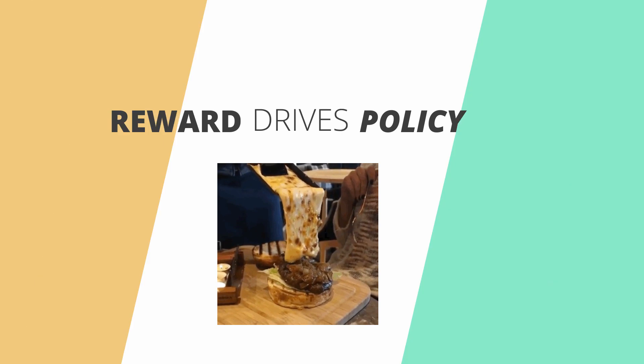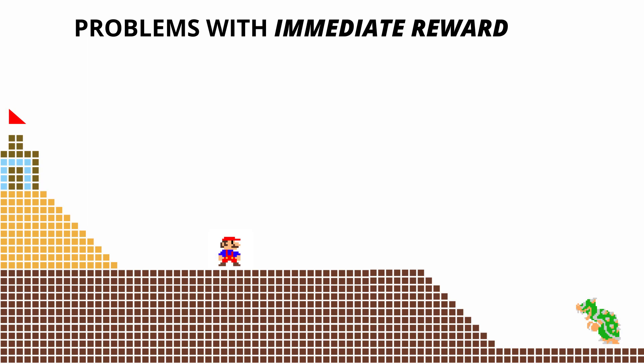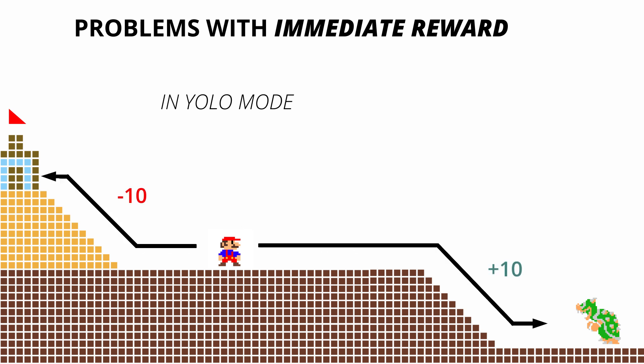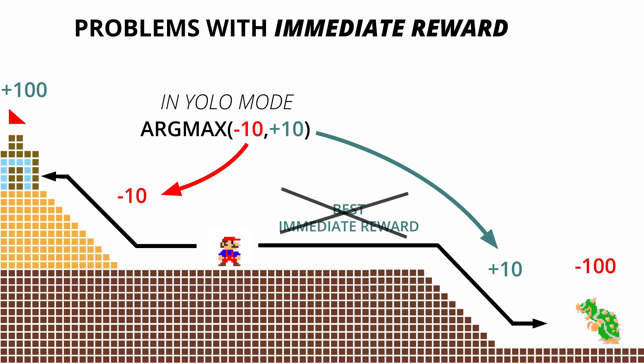Apart from policy, reward is the second most important concept in RL. In the illustration shown, if we were to take the action based on the maximum reward, then we may never encounter the jackpot. That's because it is fenced by low rewarding actions before it. So we can clearly see that the simple immediate reward cannot drive the policy.